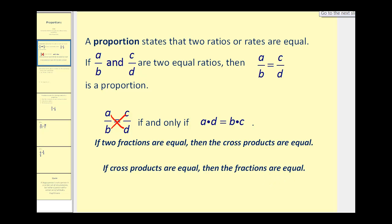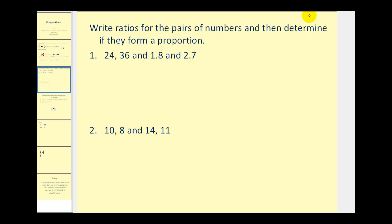Let's take a look at an example of this. We want to write ratios for the pairs of numbers and then determine if they form a proportion. So for number one, the first ratio would be 24 to 36, and the second ratio would be 1.8 to 2.7.